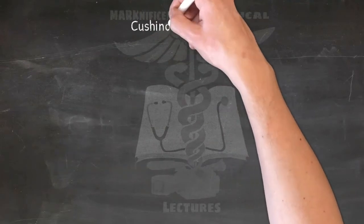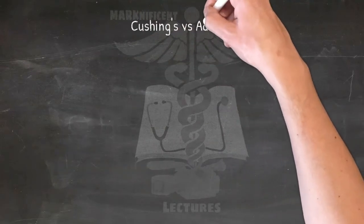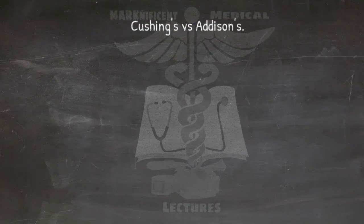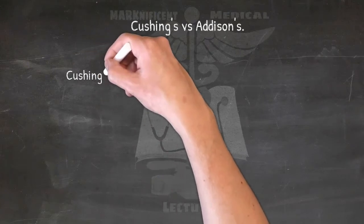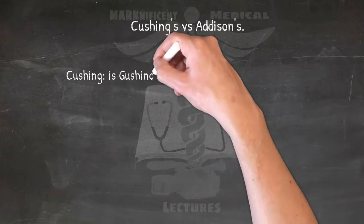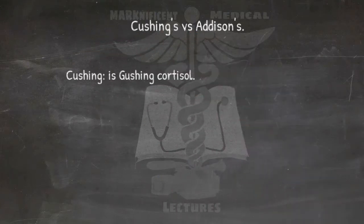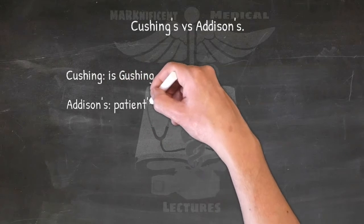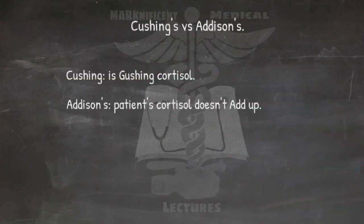Adrenal disorders in Cushing's versus Addison's: Cushing's is gushing cortisol; in Addison's, patients' cortisol doesn't add up.